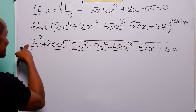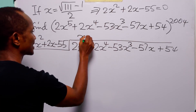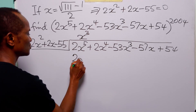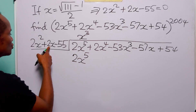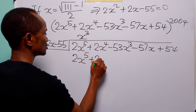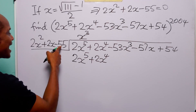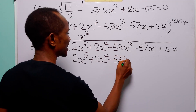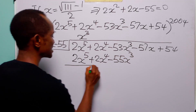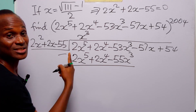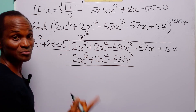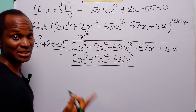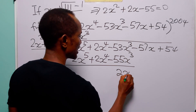2x⁵ divided by 2x² gives x³. x³ times (2x² + 2x − 55) gives 2x⁵ + 2x⁴ − 55x³. We subtract: the x⁵ and x⁴ terms cancel to zero, and −53x³ − (−55x³) = 2x³.